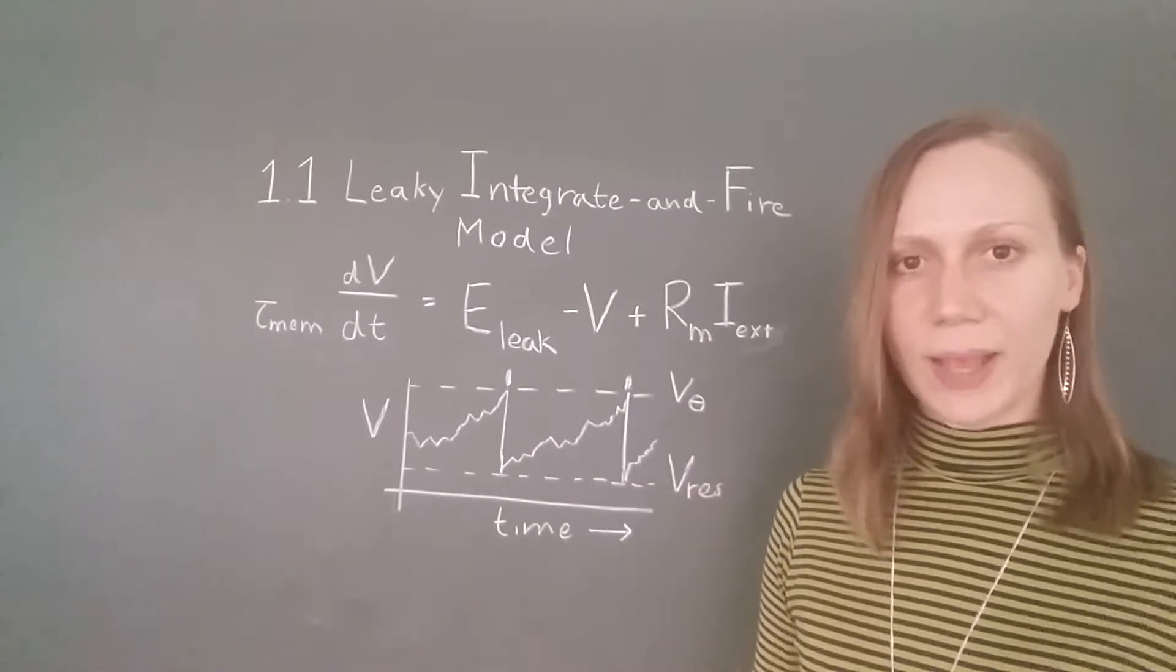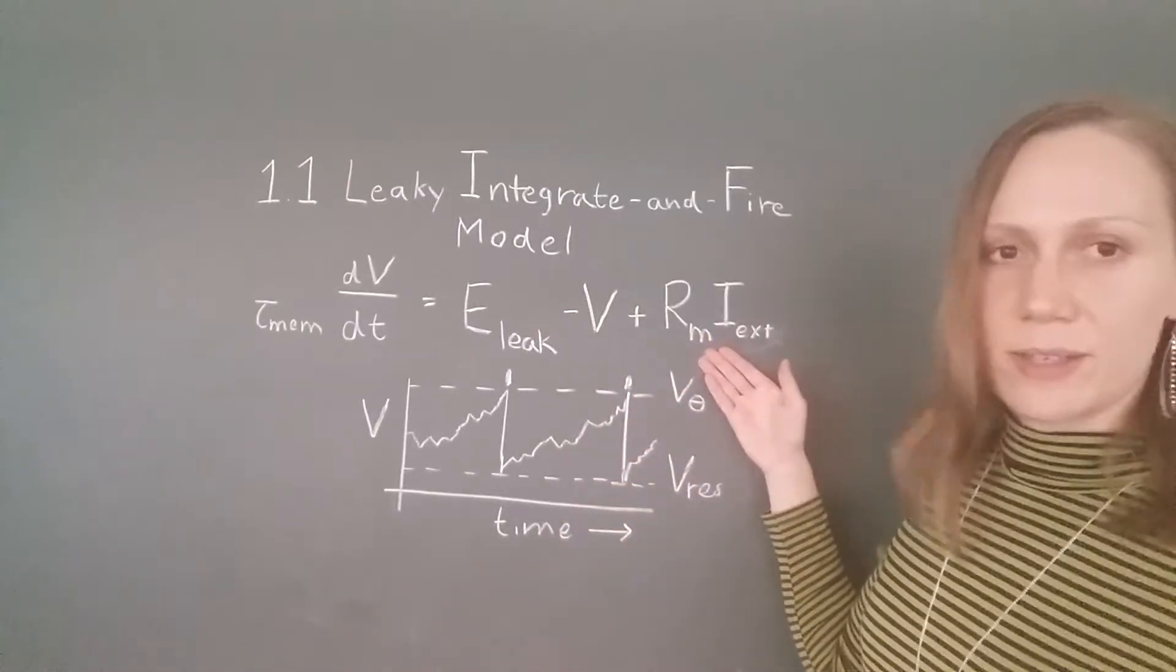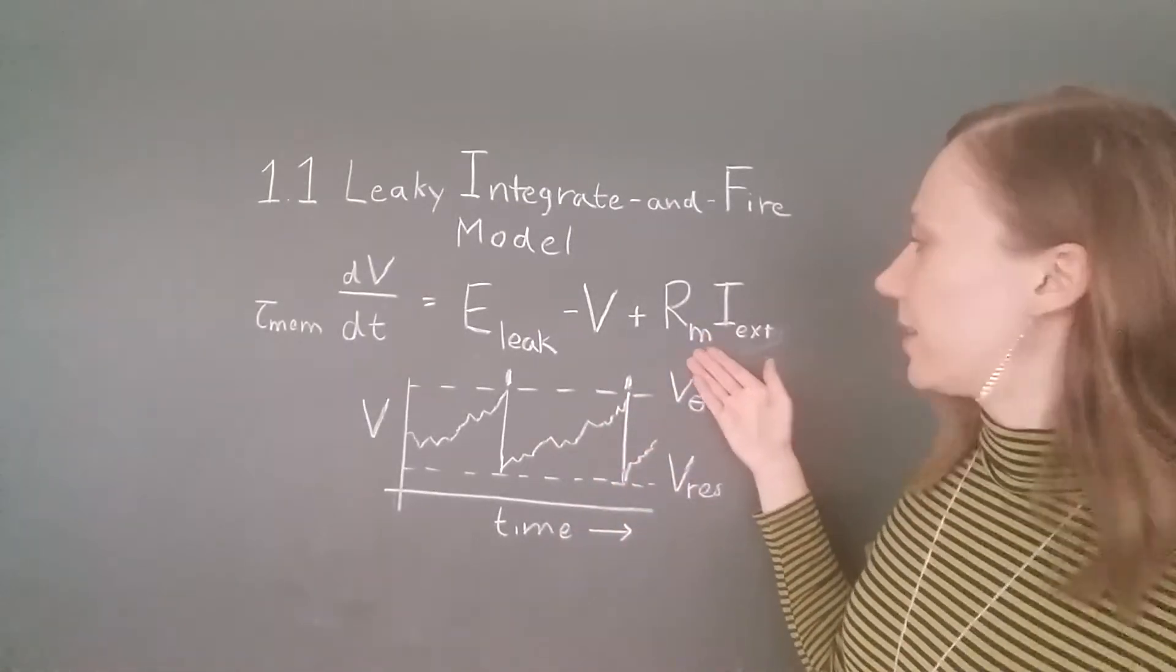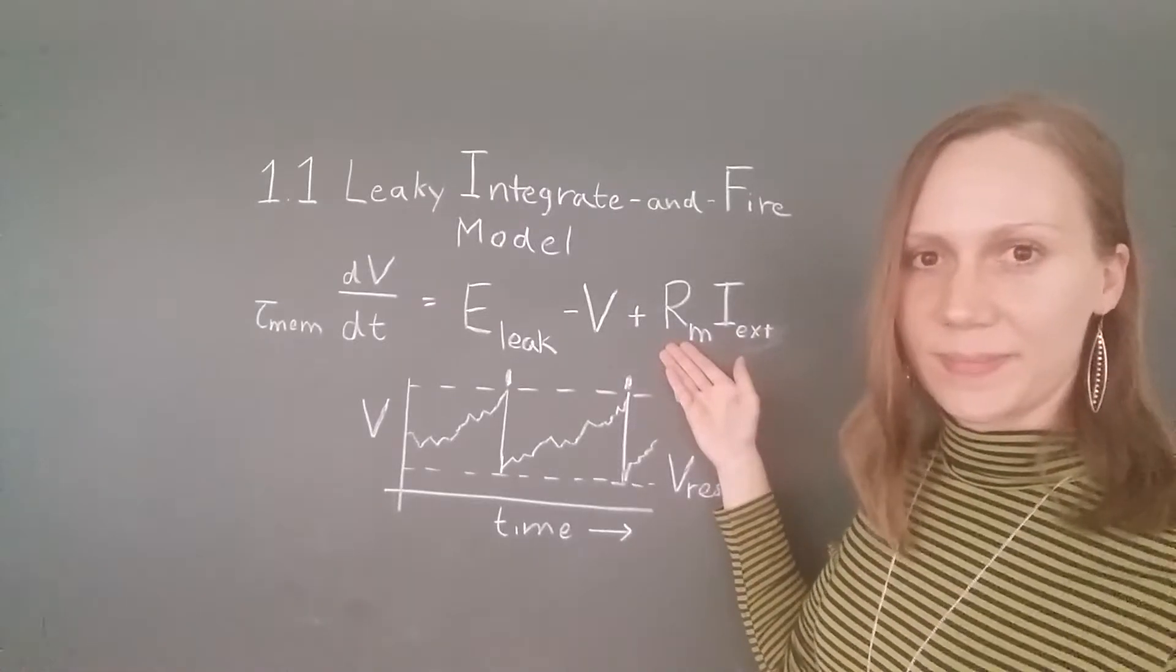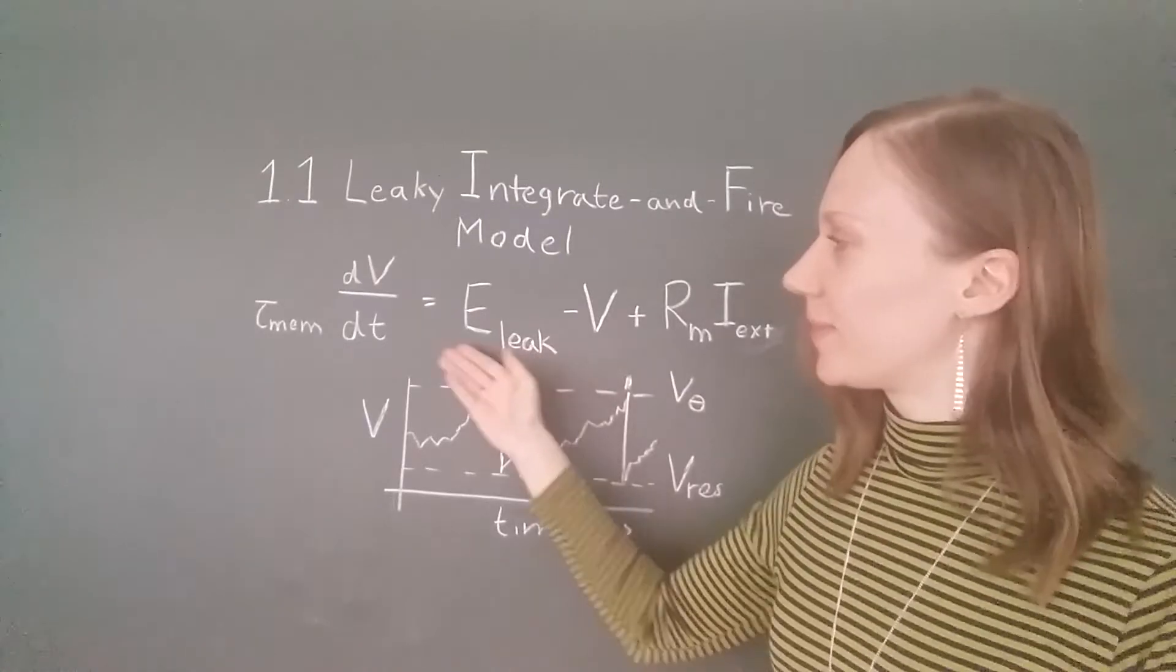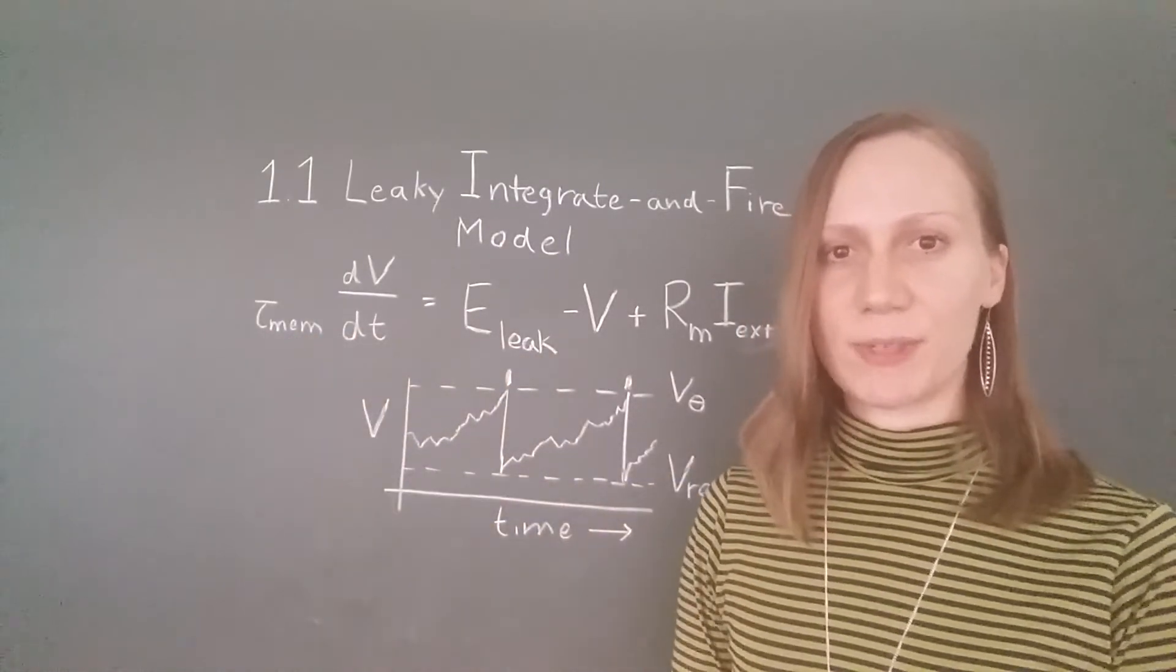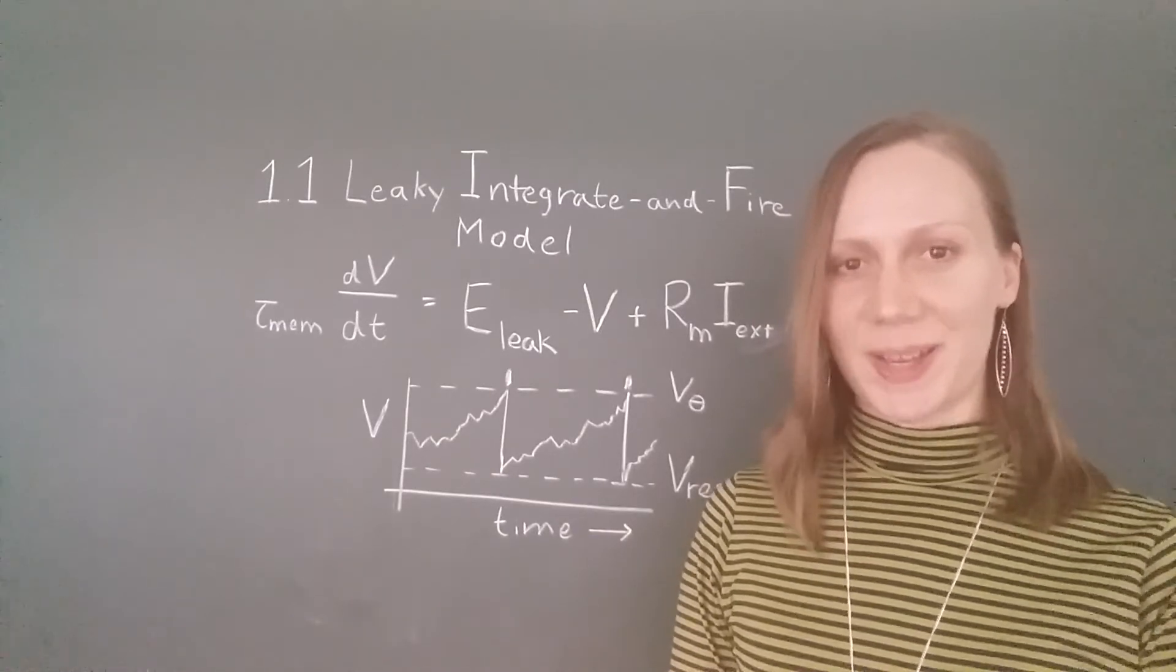Let us start by adding a fixed current to the membrane, included in this term here. Together with the membrane resistance, we also add the reversal potential for the leak and the membrane time constant, and verify the response of the neuron in terms of spikes.